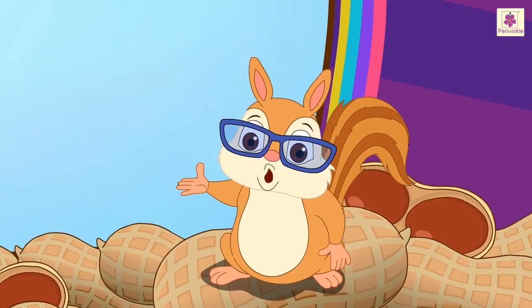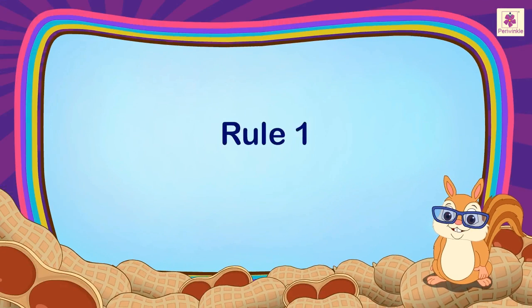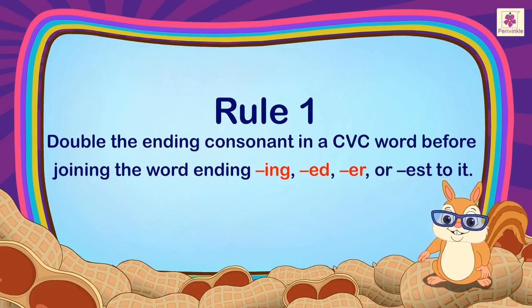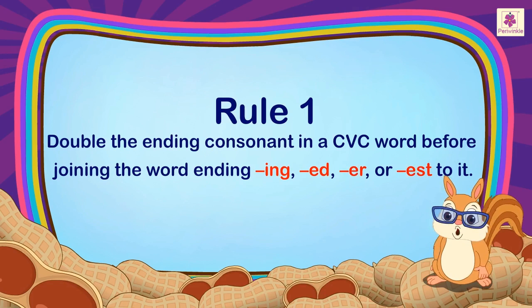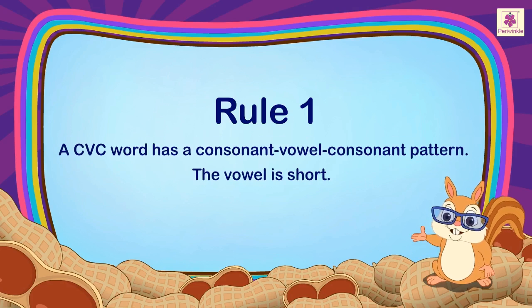Let us learn a few rules of spelling. Rule 1: Double the ending consonant in a CVC word before joining the word ending. A CVC word has a consonant-vowel-consonant pattern. The vowel is short.